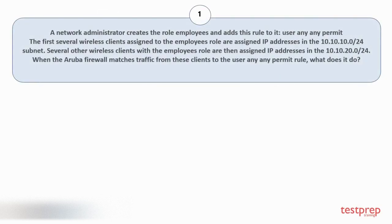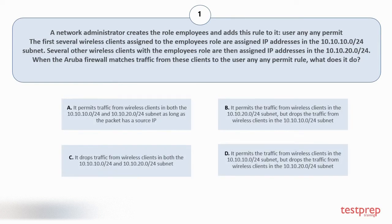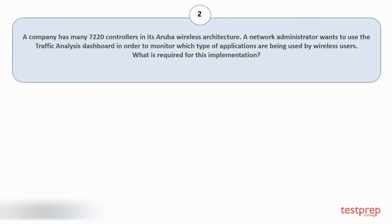Question number 1: A network administrator creates the role 'employees' and adds the following rule to it. When the Aruba firewall matches traffic from these clients to the 'user any permit' rule, what does it do? Option A: It permits traffic from wireless clients in both subnets as long as the packet has a source IP. Option B: It permits traffic from wireless clients in one subnet but drops traffic from wireless clients in the other subnet. Option C: It drops traffic from wireless clients in both subnets. Option D: It permits traffic from wireless clients in one subnet but drops traffic from wireless clients in the other subnet. The correct answer is option A.